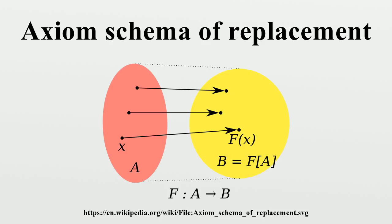Thus, if one class is small enough to be a set, and there is a surjection from that class to a second class, the axiom states that the second class is also a set. However, because ZFC only speaks of sets, not proper classes, the schema is stated only for definable surjections, which are identified with their defining formulas.